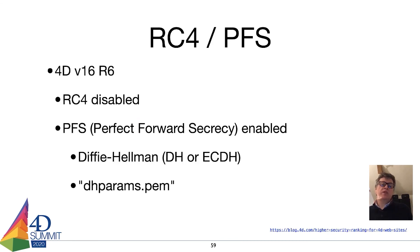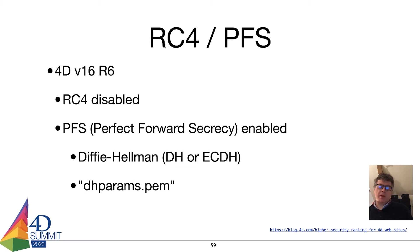In 4D v16 R6, two things happened for web serving: RC4 encryption was disabled by default, and Perfect Forward Secrecy (PFS) was introduced. PFS offers better protection of the ephemeral session key if your secret key has been compromised. You'll notice a new file appearing called dhparams.pem, used with the Diffie-Hellman algorithm (DH or ECDH — the elliptic curve version).